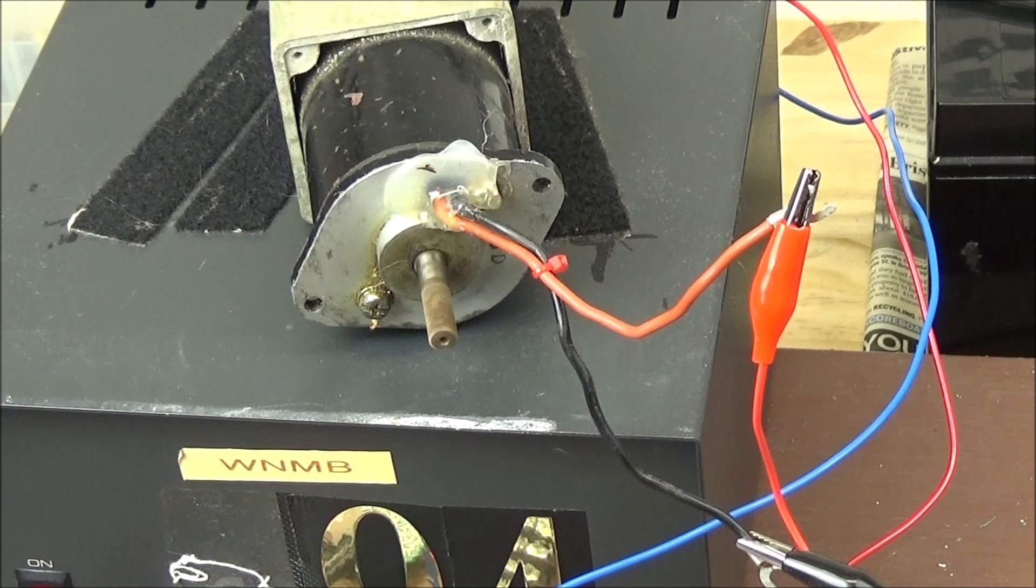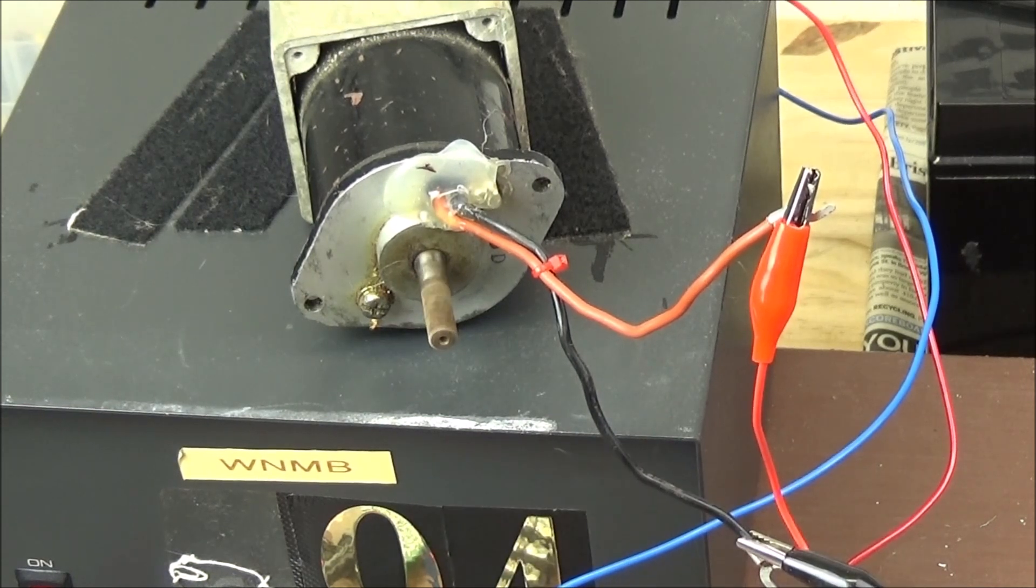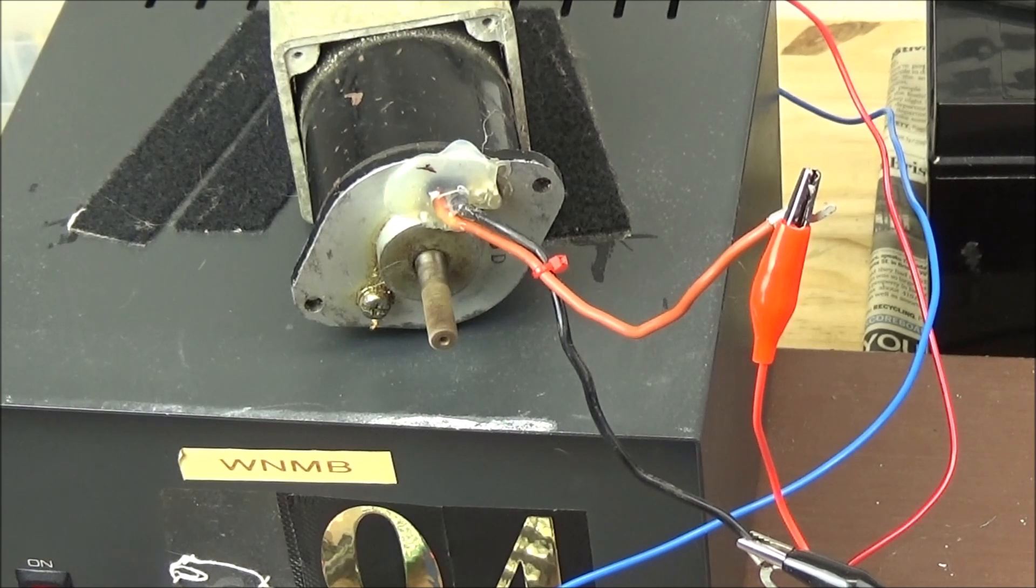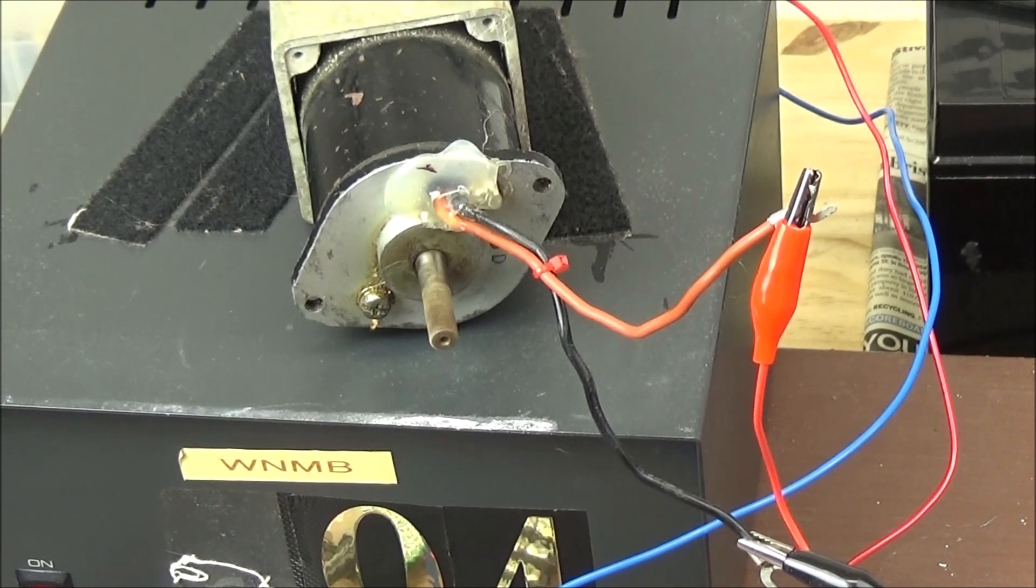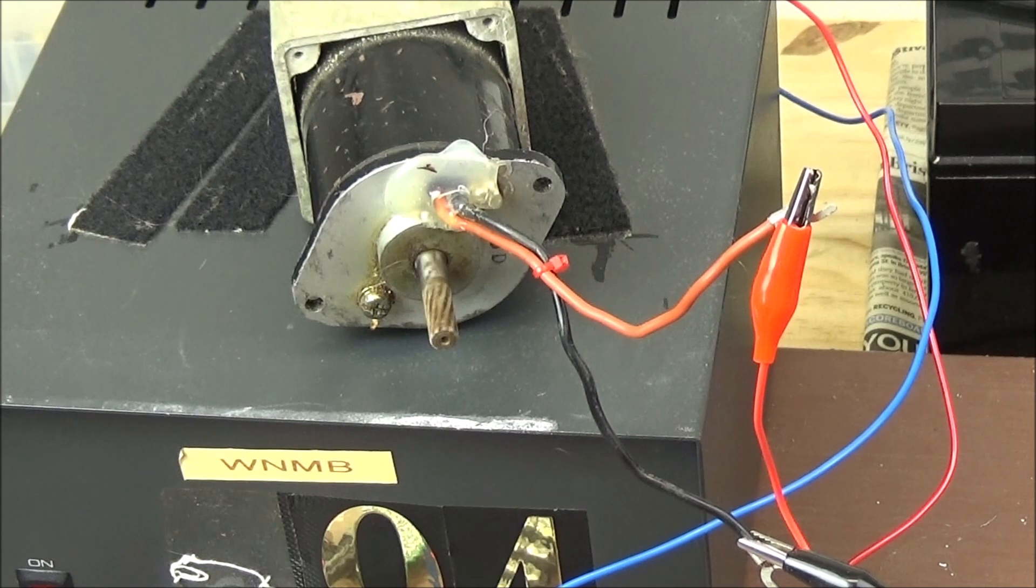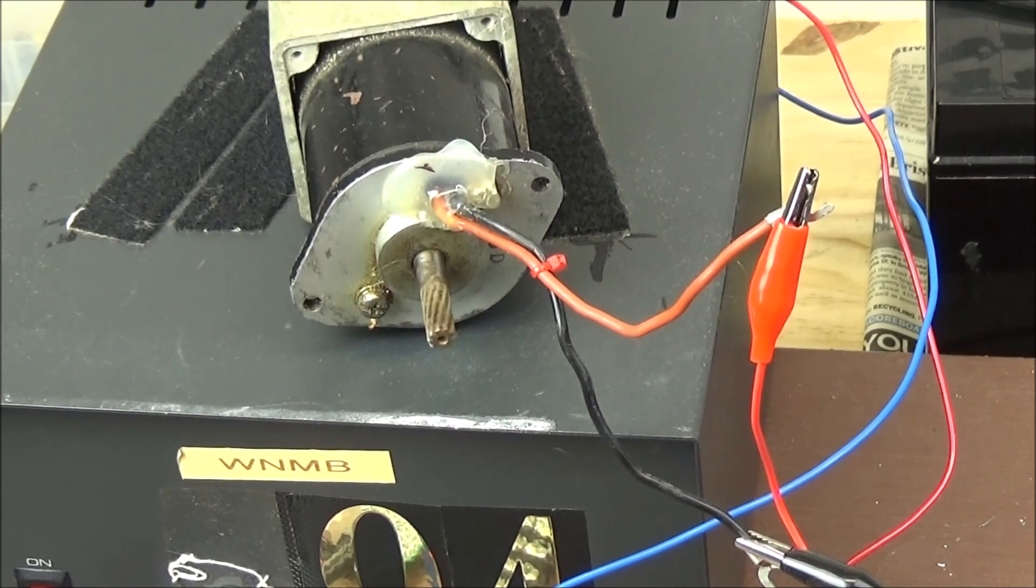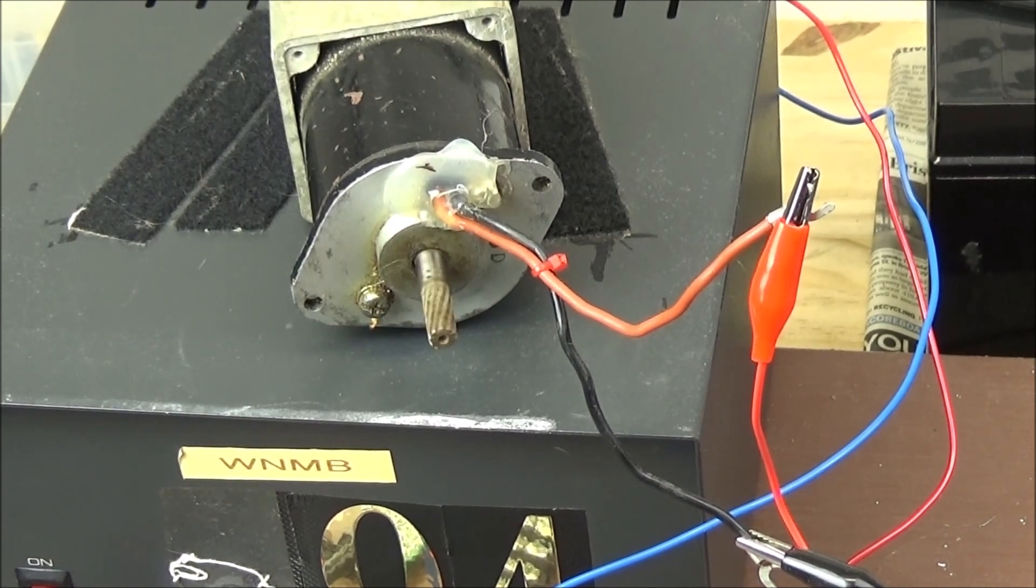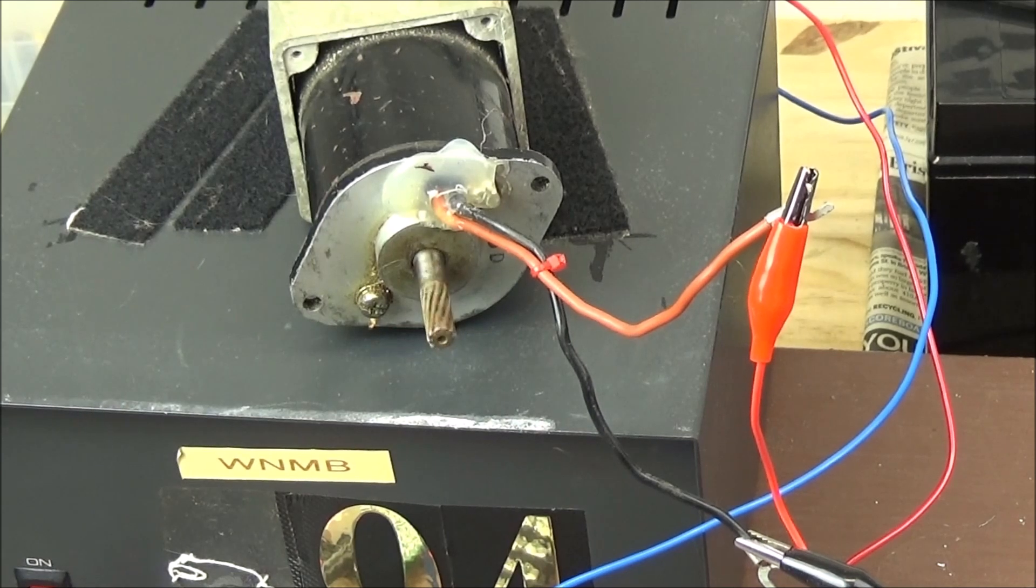So there's no doubt that 3.3 volts from an Arduino, Raspberry Pi, or Picaxe works just fine with this circuit as is. You don't need any level converters, and you can't get any better with controlling a motor than this.